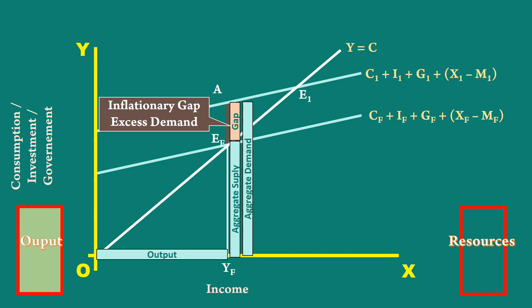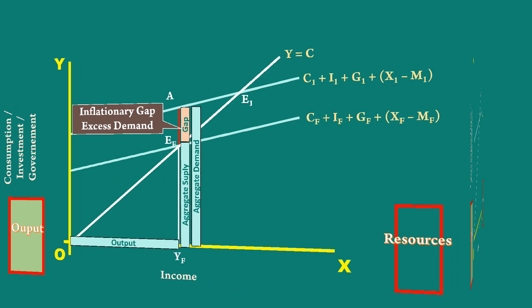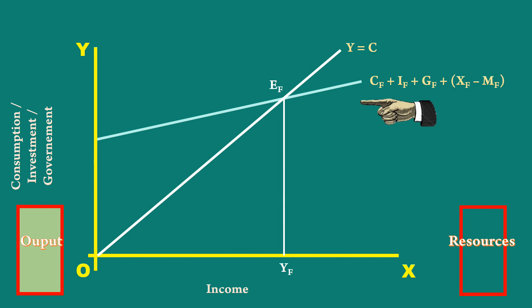We shall turn to deflationary gap. See this graph. The economy is operating at YF, full employment equilibrium. There is a fall in investment. The aggregate demand curve is shifted down. Now, the new aggregate demand curve is C0, I0, G0, X0, minus M0. The economy moves down vertically to the point B.